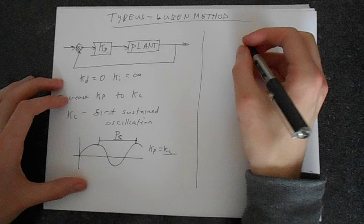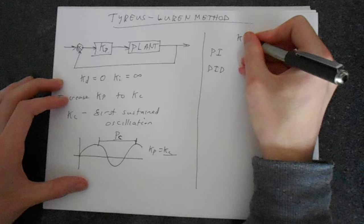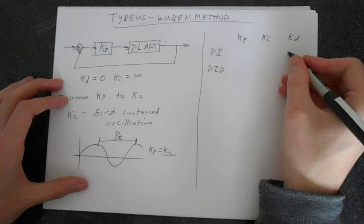We have a PI controller or a PID controller. We've got KP, we've got KI, and we've got KD. Well, it's a PI controller, so there's going to be no D there.